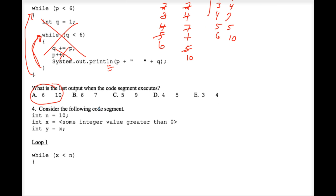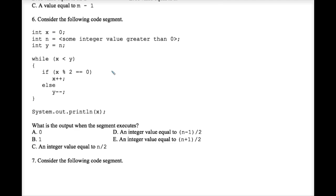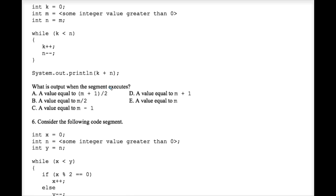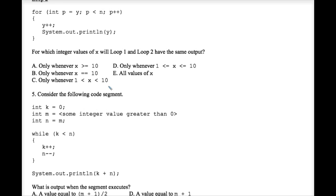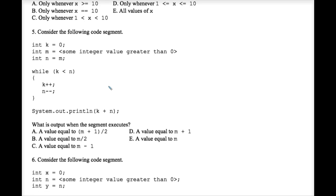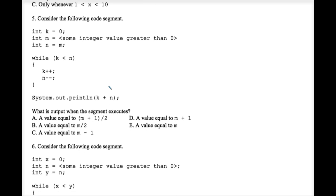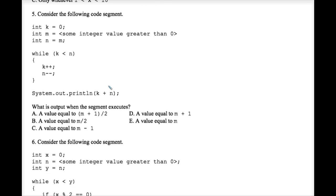Number four is cut off by the page, so I want to skip that question as it would be too awkward to trace here. Let's do number five — now we have to put our thinking cap on and imagine m as some whole number greater than zero.